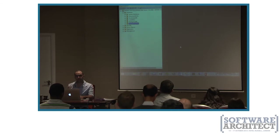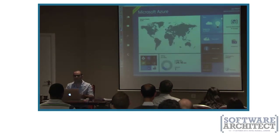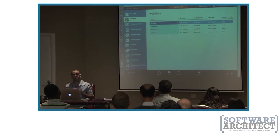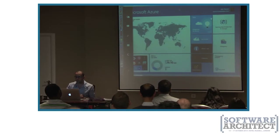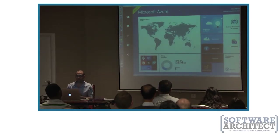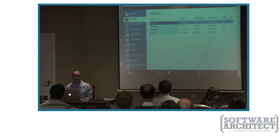Now we have two backup files and we need to create databases from them. Let's move to the management portal. There are two versions — the new one and the old one. The first thing I want to do is create a database server. In SQL databases, we have two things: a SQL database server — just like installing SQL Server on a virtual machine — and then the database itself. I'll go to SQL Databases, then Servers, and click Add.